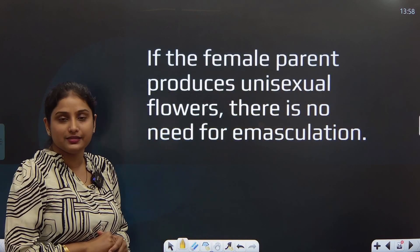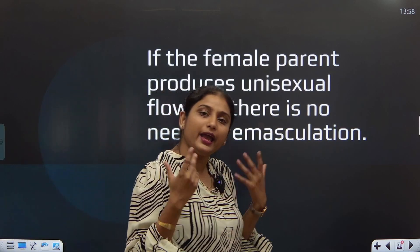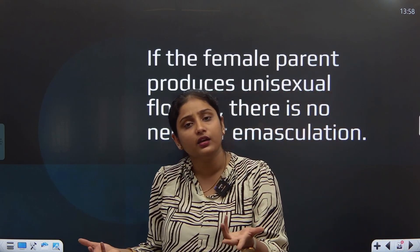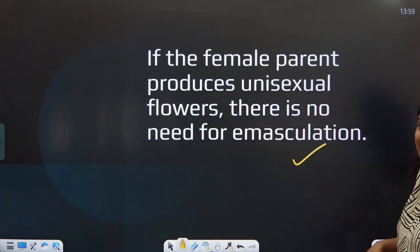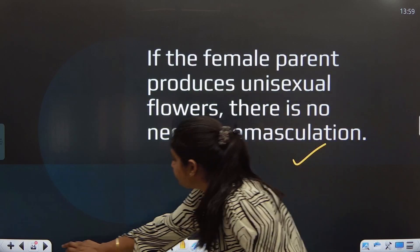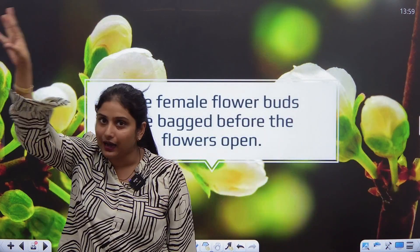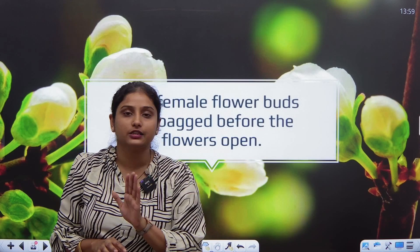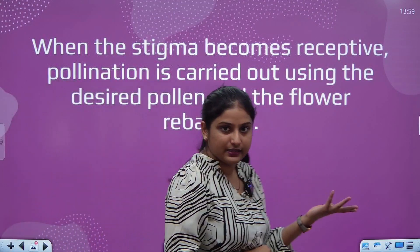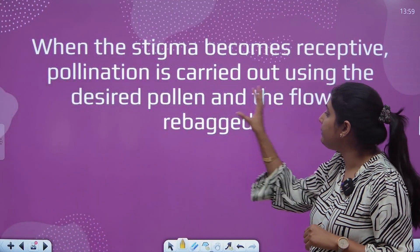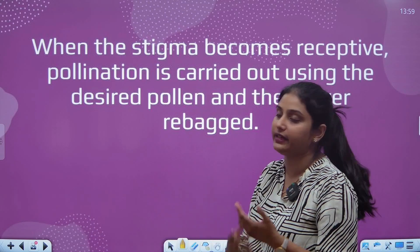NCRT also mentions that if the female parent produces unisexual flowers — meaning the flower is already female — there is no need for emasculation. But the female flowers still need to be bagged, because pollen from outside can still come. When the stigma becomes receptive, pollination is carried out just as normally studied: dust the pollen on the stigma, bag it again, and it's done.